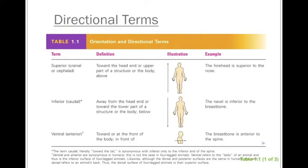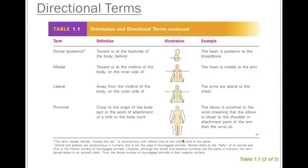The next set of terms has to do with the front and back of the body. In healthcare, you no longer say 'front' — you use 'ventral' or 'anterior,' both meaning toward the front of the body. For example, the breastbone is anterior to the spine. The opposite is 'posterior' or 'dorsal' — like a dorsal fin on a dolphin — meaning toward or at the back side of the body. For example, the heart is posterior to the breastbone.